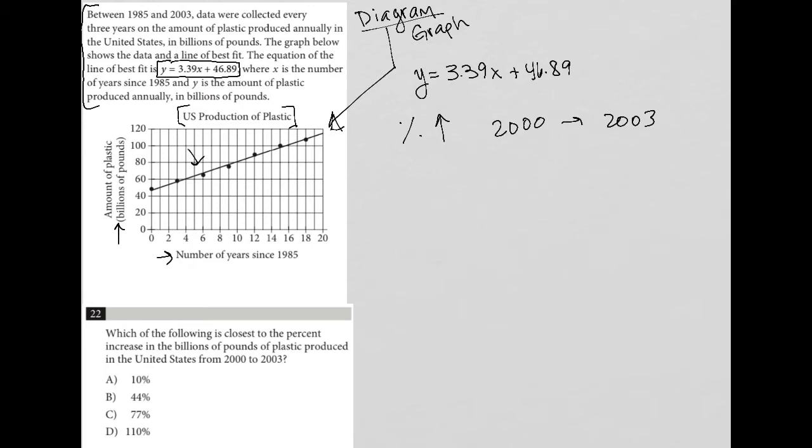If I'm going to find the percent increase between these two years, I need to know how many billions of pounds of plastic were produced in 2000, how many were produced in 2003, and I can calculate the percent increase between those two numbers.